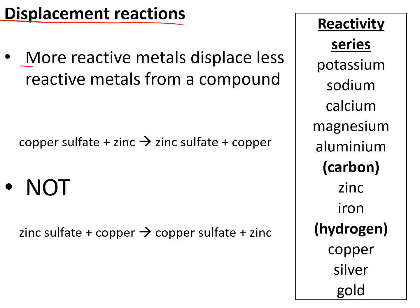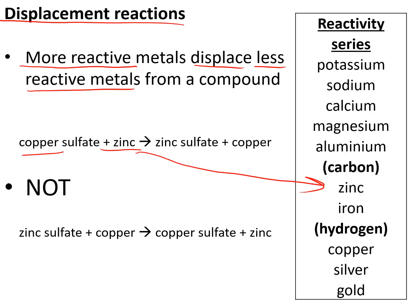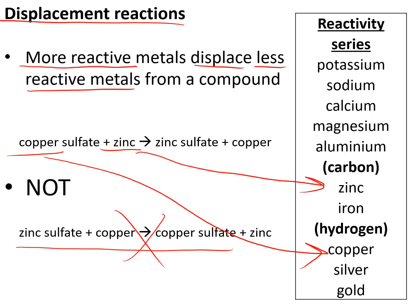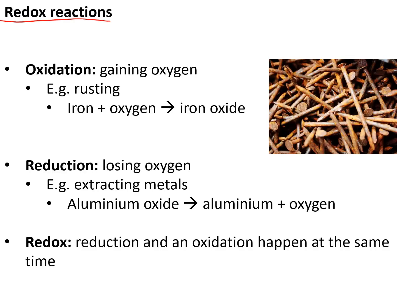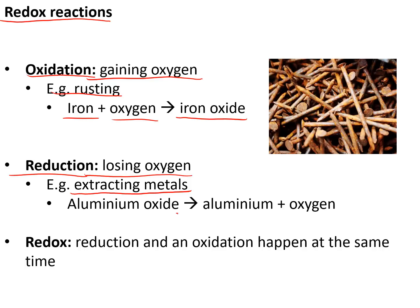Displacement reactions are ones in which a more reactive metal displaces a less reactive metal from a compound — for example, copper sulfate and zinc make zinc sulfate and copper, because zinc is higher up the reactivity series than copper. The reverse reaction does not take place because copper cannot displace zinc. Redox reactions involve oxidation and reduction. Oxidation is when an element or compound gains oxygen; reduction is when it loses oxygen. A good example of oxidation is rusting — iron and oxygen reacting to make iron oxide. A good example of reduction is extracting metals from their compounds. A redox reaction is one where reduction and oxidation happen at the same time.